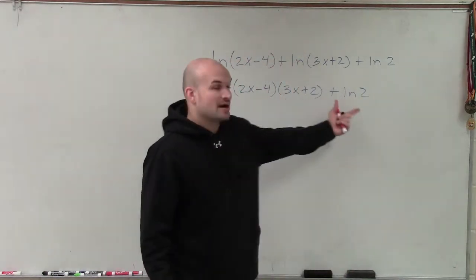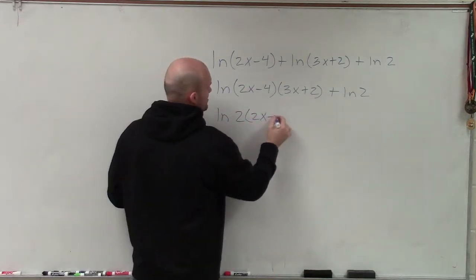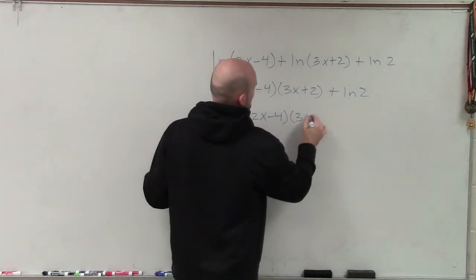Now, I can apply the product rule one more time. And I'm going to rewrite the two in front because that's the way we like to write them. So now I can multiply this again. So that would be 2 times 2x minus 4 times 3x plus 2.